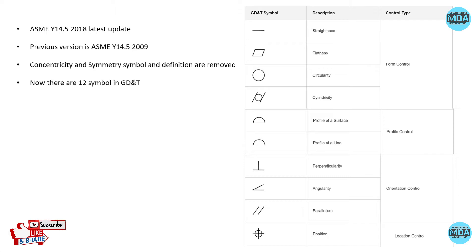The previous version is ASME Y14.5 2009, but in the latest Y14.5 2018, the concentricity and symmetricity symbols are removed. Now we have 12 symbols instead of 14.